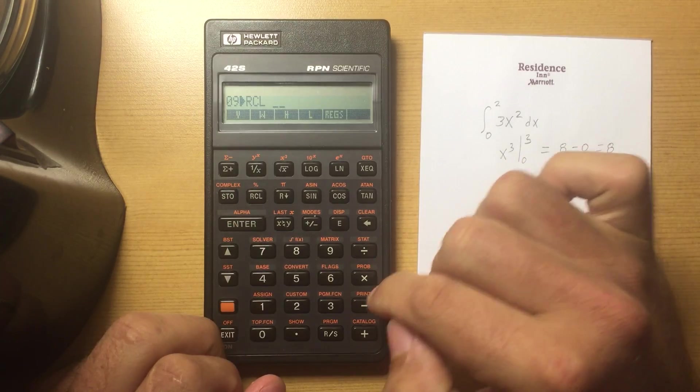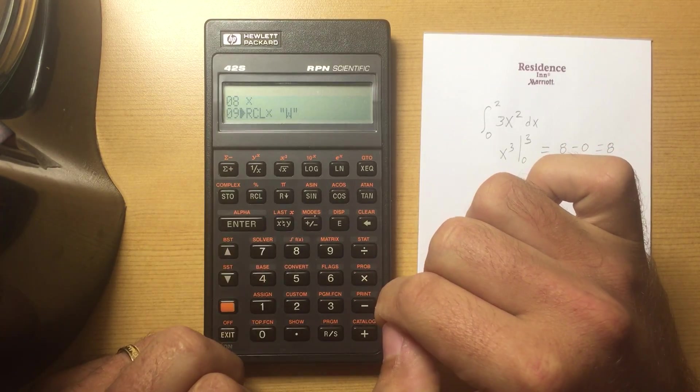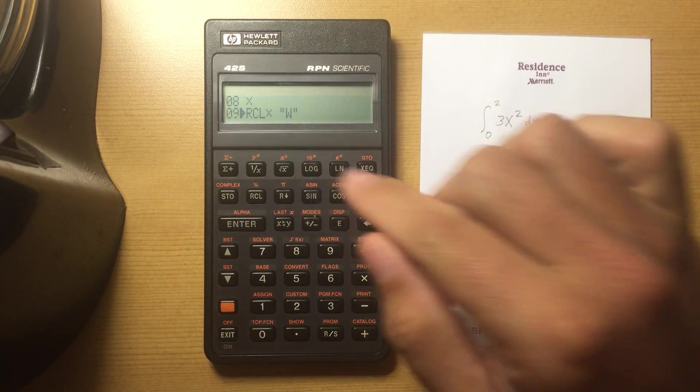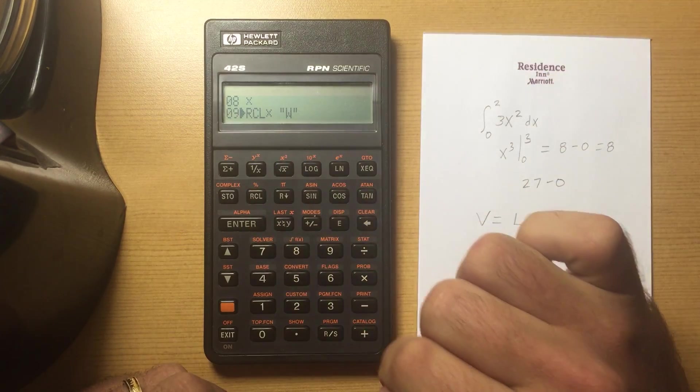I'll go ahead and do that: recall, recall times W. That will recall whatever is in the W register and multiply it by what's in the stack.